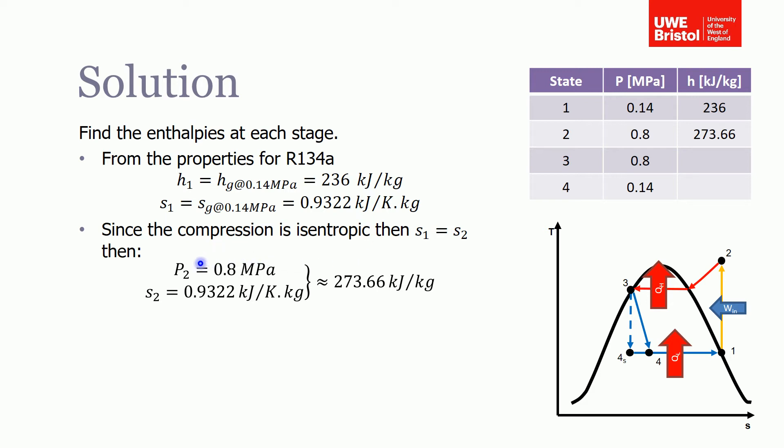Then if we look at the data for the refrigerant and we know it's superheated, so we look at pressure of 0.8 megapascals and using an entropy of 0.93 to the nearest enthalpy, and that works out, it comes out as 273.66 kJ per kilogram, and we write that in the table.